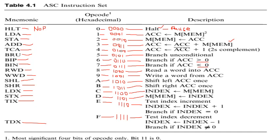Instructions 8 and 9 are RWD and WWD — the input and output instructions. RWD reads a word into the accumulator, and WWD writes a word from the accumulator. If we want data from an input port, we use RWD. If we want to output data, we use WWD. Their binary representations are 1000 and 1001 respectively.